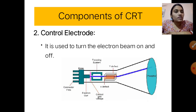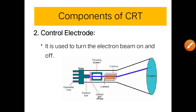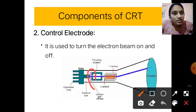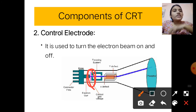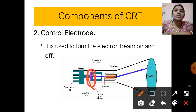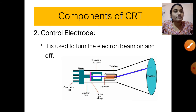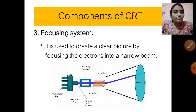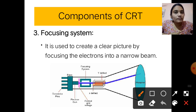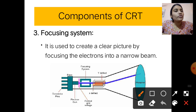The control electrode is used to turn the electron beam on and off. The focusing system creates a clear picture by focusing the electrons into a narrow beam directed towards the phosphorus-coated screen.